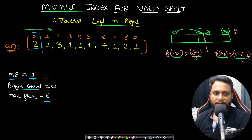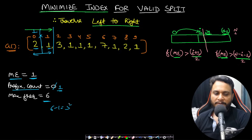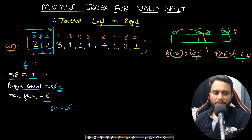Move to the right: the new element is 1, which equals the majority element, so the prefix counter increments to 1. There are 2 items on the left; the majority element must occur more than 1 time, but it occurs exactly 1 time, so this split is not valid. Move forward: three does not equal the majority element, so the count stays the same, and this split is also not valid.